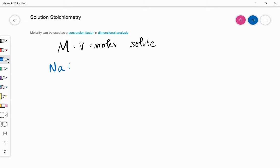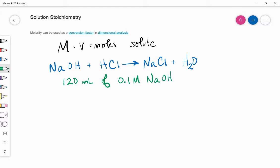we have a reaction between sodium hydroxide and hydrochloric acid that's going to produce sodium chloride and water. A typical question might be something like, you have 120 milliliters of 0.1 molar NaOH, and you want to know the volume of 0.2 molar HCl that will react with that amount of the sodium hydroxide.